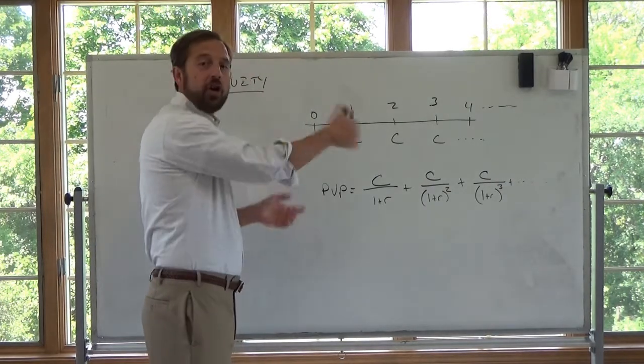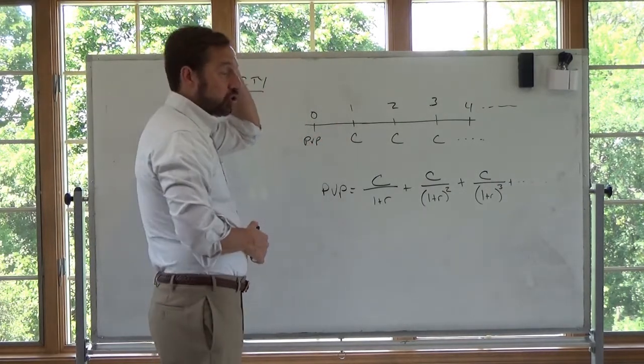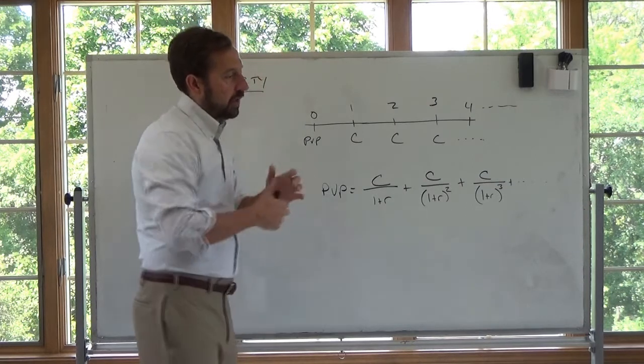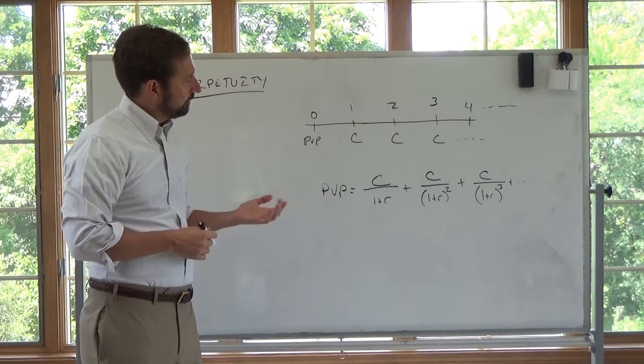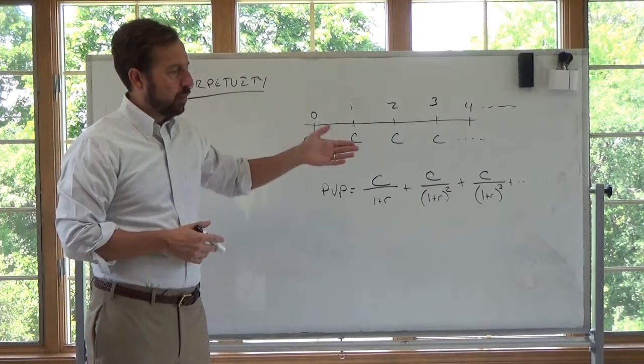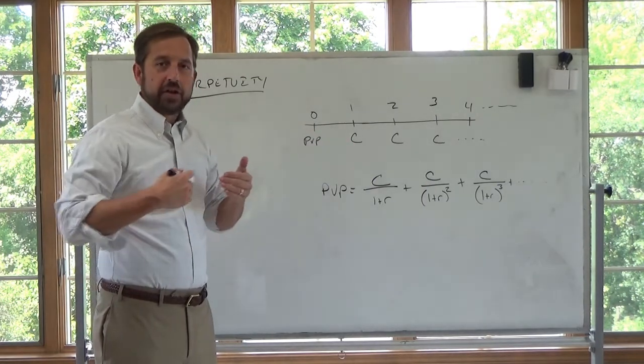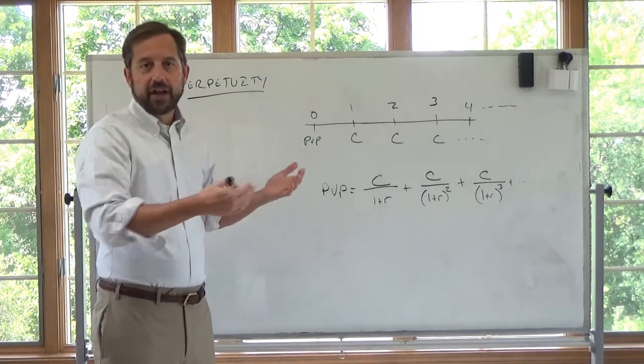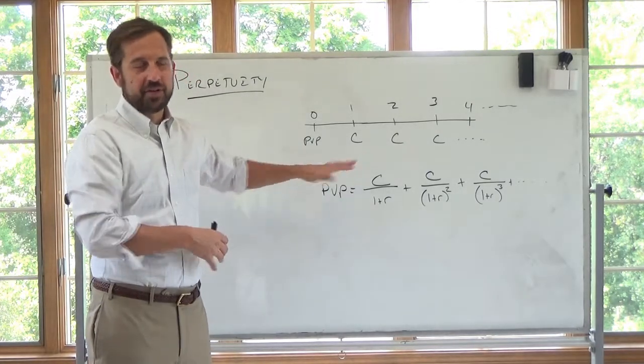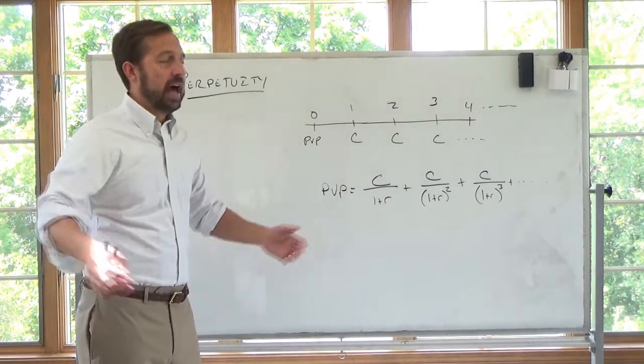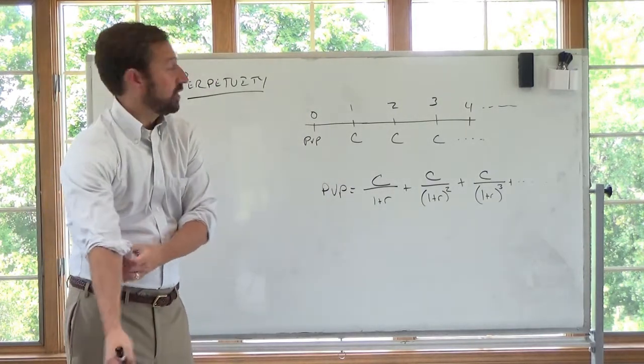Now you might say, well, you have to do this out to infinity. True. Well, no. The idea here is to get the exact, you would. However, to do this, you could go out just like 50 periods, 100 periods in Excel, and you'll get the present value of perpetuity. So in effect, what you can think of is infinite is maybe 50 periods, 100 periods.